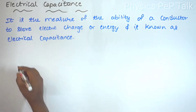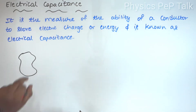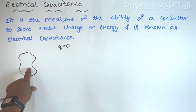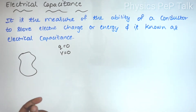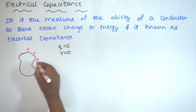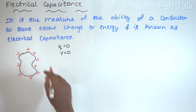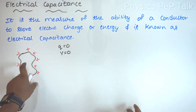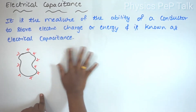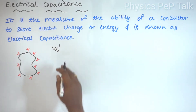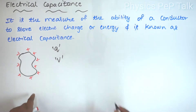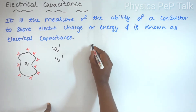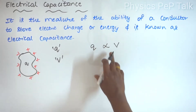Consider a conductor. Initially, the charge of this conductor is zero, so the potential is also zero. When I add charge to this body, the charge Q becomes non-zero. There will be a potential within this body. As a result of the presence of charge, the body attains an electric potential V. So the charge on the body is directly proportional to the potential of this body.